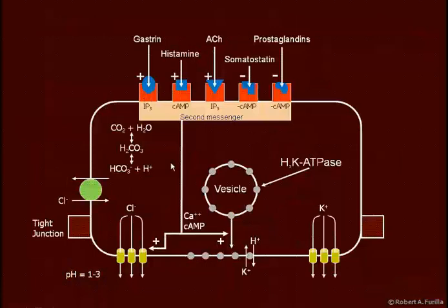In a parietal cell, the three stimulants — gastrin, histamine, and ACH — work through second messengers. Histamine acts through adenylate cyclase and cyclic AMP; gastrin and ACH act through phospholipase and IP3 to phosphorylate and trigger the movement of vesicles to fuse with the membrane, placing more hydrogen-potassium pumps onto the membrane. More hydrogen-potassium pumps fused with the membrane leads to increased hydrogen secretion into the lumen of the stomach.